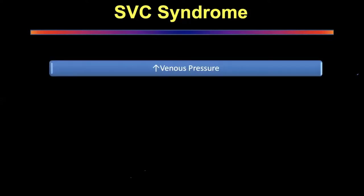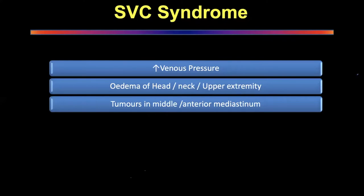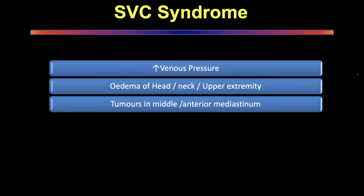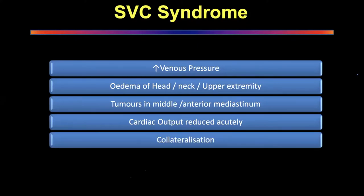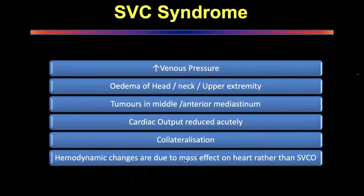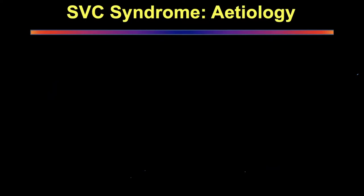When obstruction of the SVC occurs there is increased venous pressure, back pressure, and edema of the head, neck, and upper extremities, predominantly caused by tumors in the mediastinum. Cardiac output is reduced acutely with intravascular obstruction. With extravascular compression there will always be collateralization. The hemodynamic changes are largely due to mass effect on the heart rather than SVC obstruction directly — it is the tumor increasing and pressing on the heart that causes hemodynamic compromise.